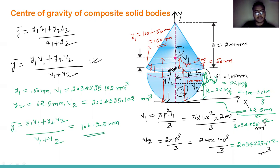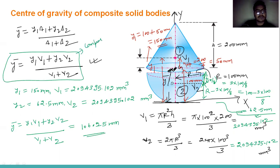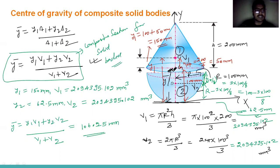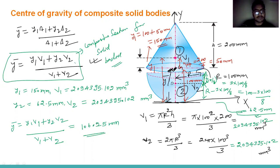The result is y-bar equals 106.25 mm. So whenever you calculate for a composite section of a solid body, use the formula y-bar equals (y1·V1 + y2·V2)/(V1 + V2), where y1 and y2 are the distances of each centroid from the reference axis and V1, V2 are the respective volumes.